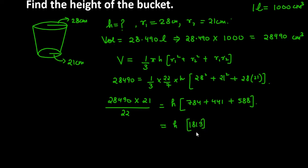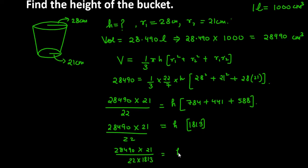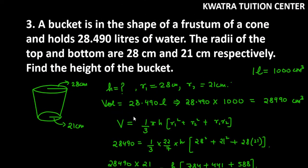The bracket sum equals 1813. Taking everything to the left-hand side, the next step is: H = (28,490 × 21) ÷ (22 × 1813). Simplifying this gives H = 15 centimetres. So the height of the bucket is 15 cm. This is how you calculate the height of the bucket when volume is given.